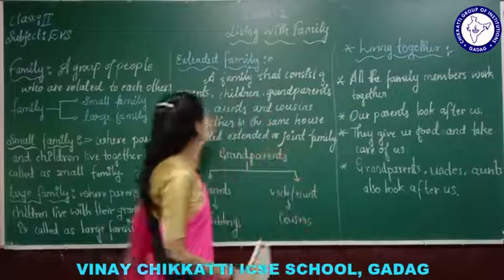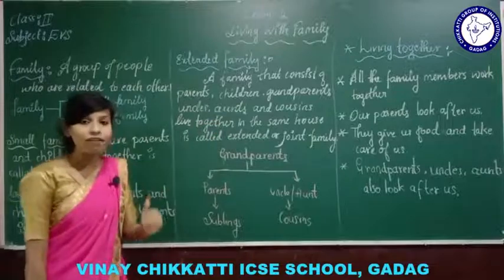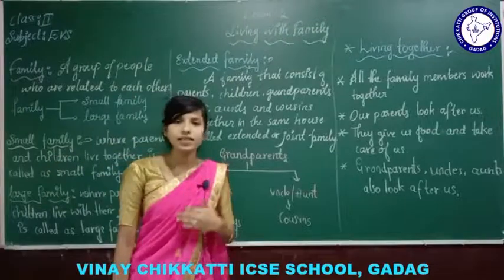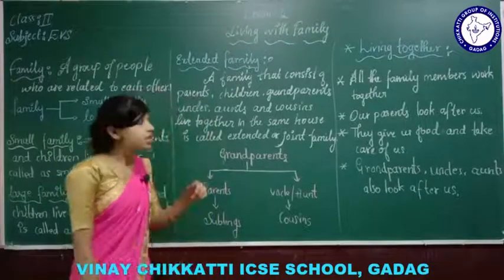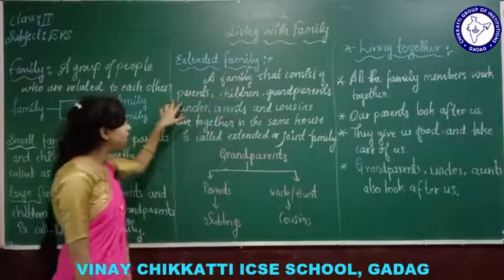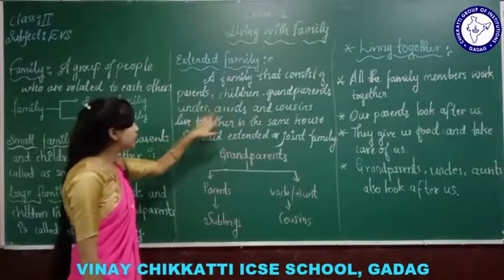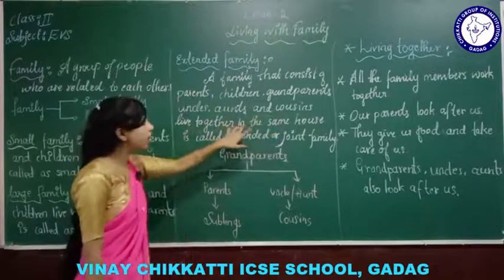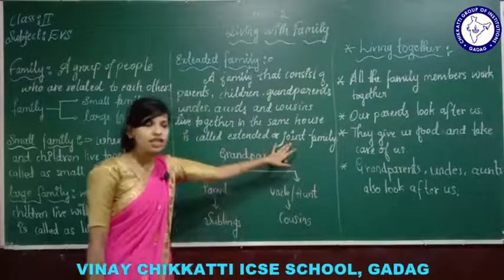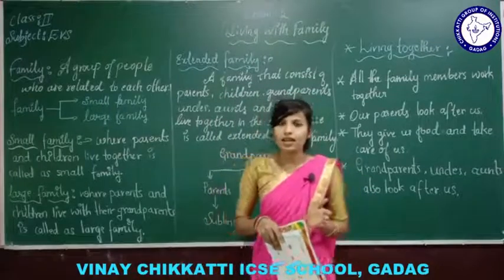Next, extended family — what does extended family mean? Apart from our parents, there are many other people also living in our house. A family that consists of parents, children, grandparents, uncles, aunts, and cousins living together in the same house is called an extended or joint family.